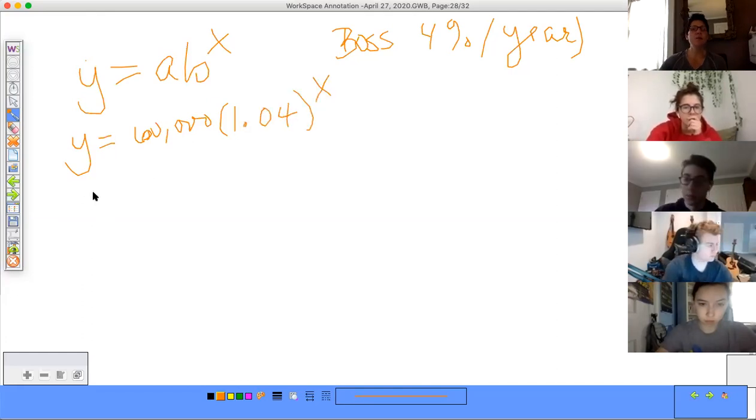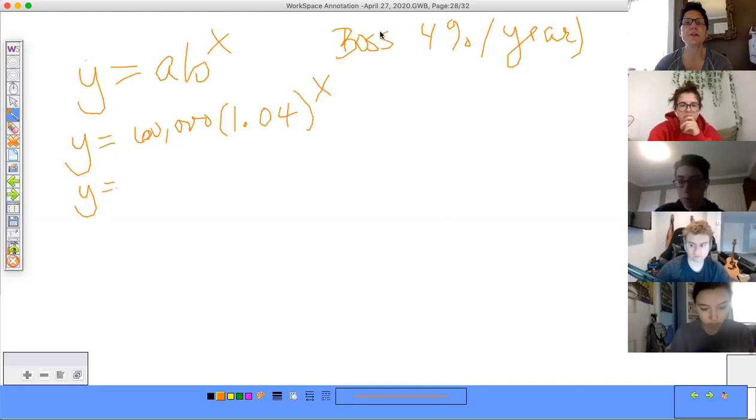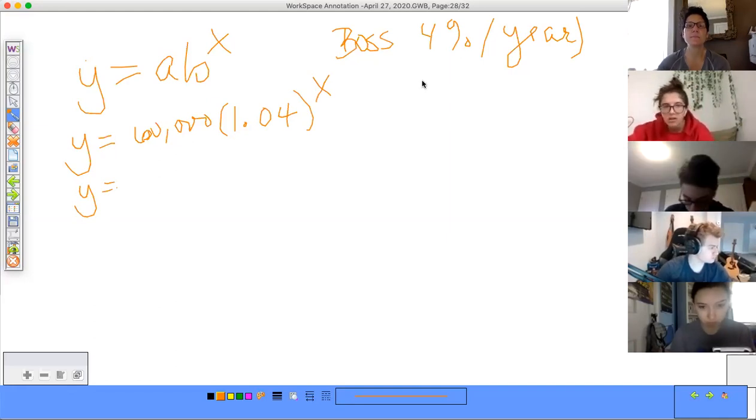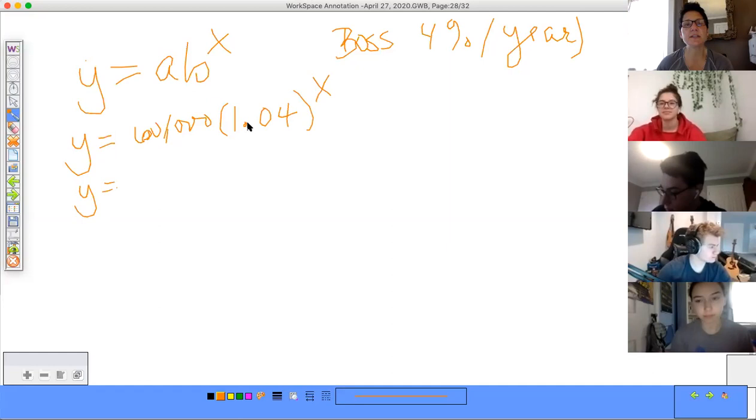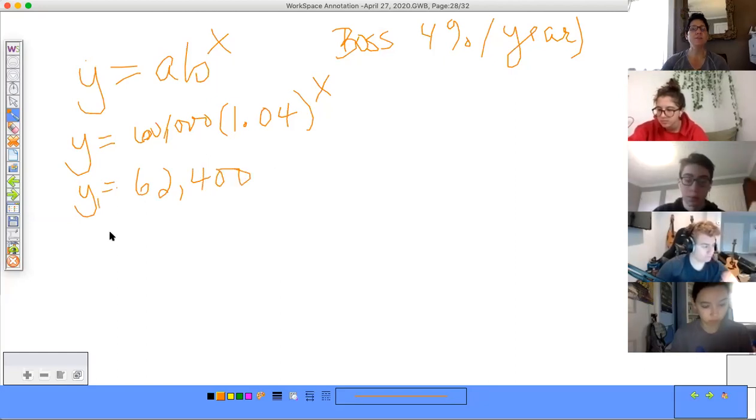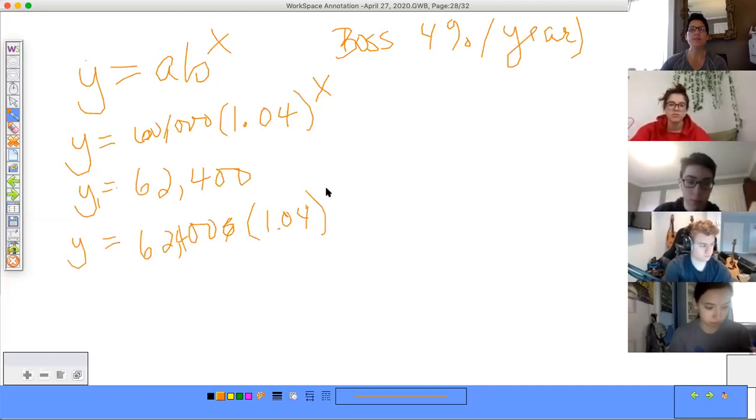It would be $60,000 times 1.04 to the x power. Right. And the thing is, when we would do it, if I said to you, what are you making after your first year? $62,400. Good. So you're making $62,400 because you get $60,000 times 1.04 to the first power. That's your after year one.